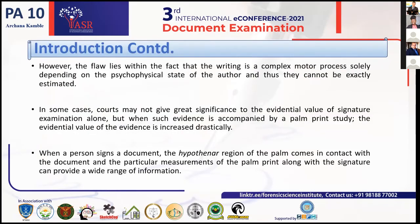When a person signs a document, the hypothenar region of the palm comes in contact with the document, and the particular measurement of the palm print, along with the signature, can provide a wide range of information. The palm can be divided into three regions: first is the interdigital region, involving the fingers and the topmost portion of the palm; then the thenar region, the region towards the thumb; and then the hypothenar region, which is also called the lateral palm region.